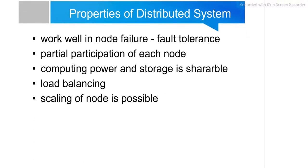In a distributed system, everything is an individual entity, so there are fewer chances of complete failure. The system works well even in the event of a node failure. Performance may be lower in some cases, but the system will never completely fail, making it easy to handle node failures.